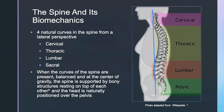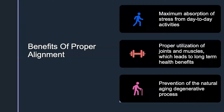Let's go back to the basics. When you look at the spine — because the spine is really the epicenter of a lot of where the ergonomic principles come from — you have four natural curves: the cervical, which is the head and neck area; the thoracic, which is the upper back; the lumbar, the lower back; and then the pelvic area. When these curves are present, balanced, and at the center of gravity, the spine is supported by the bony structures resting on top of each other, with the head naturally positioned over the pelvis — the ideal, anatomically correct position for posture.